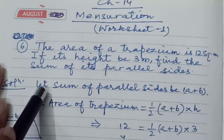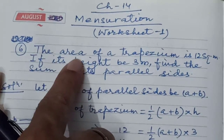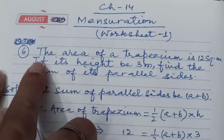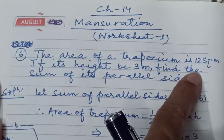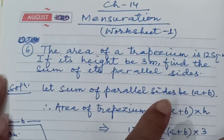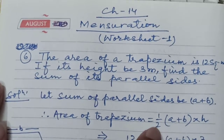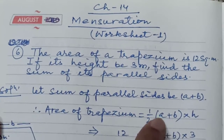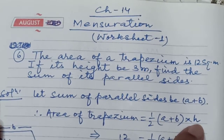See the question and understand how to solve it. The area of a trapezium is 12 square meters. If its height is 3 meters, find the sum of its parallel sides. As you know, the formula for the area of a trapezium is: 1/2 × (sum of parallel sides, denoted A + B) × height, where height is the distance between the two parallel sides.